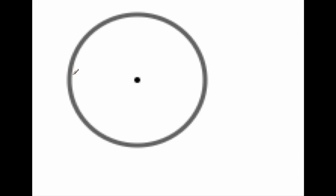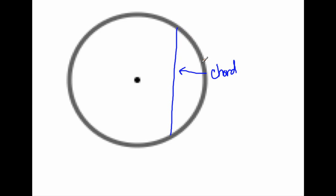A line segment that connects two points on the circle — this point and this point, or this point and that point — a line segment that connects two points on the circle is called a chord. Notice how a chord does not pass through the center point, but it does connect two points on the circle.